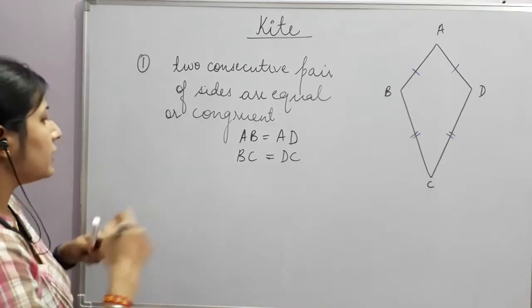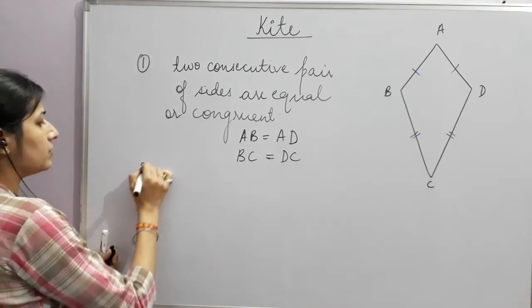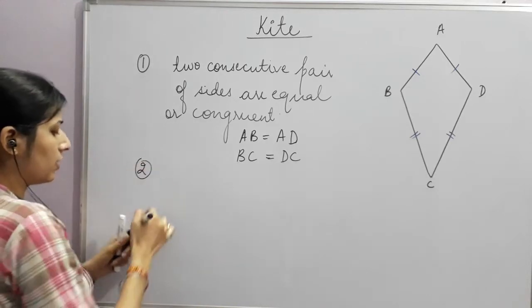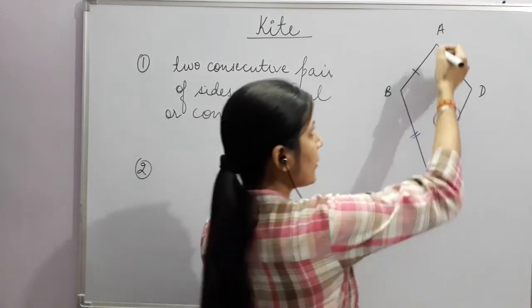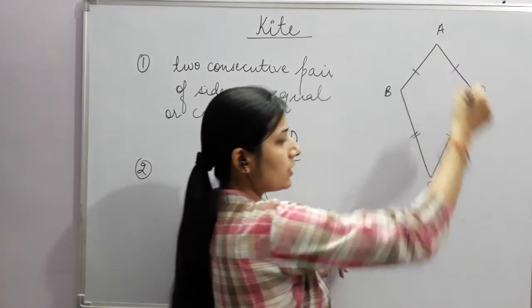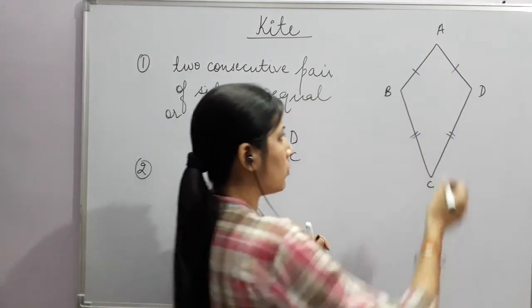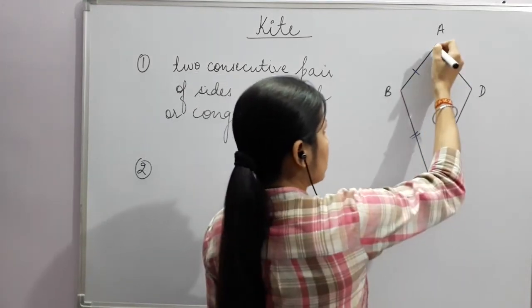Now we talk about diagonals. If we join both pairs of opposite vertices, we form diagonals. So we join A to C and B to D. These are the diagonals AC and BD.